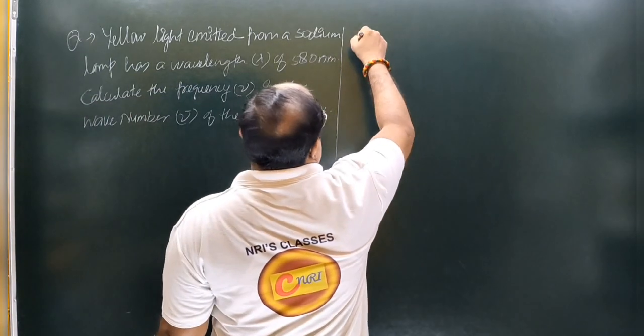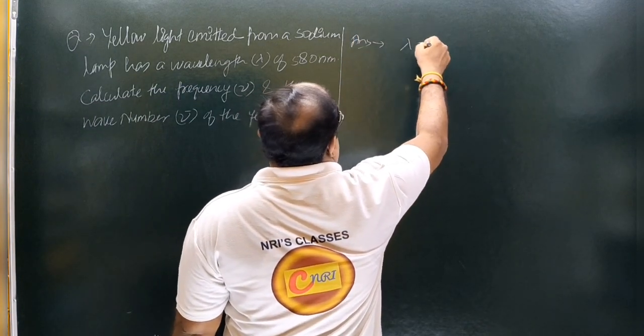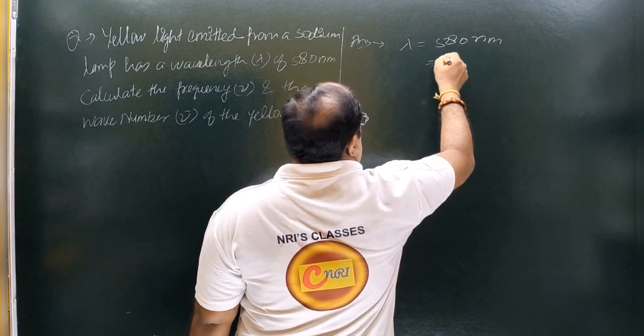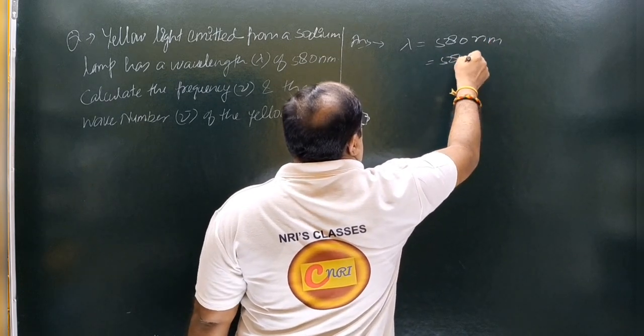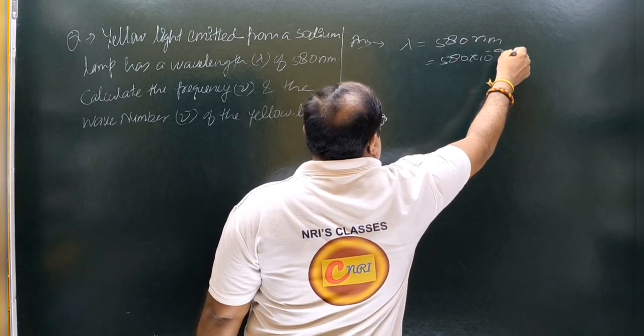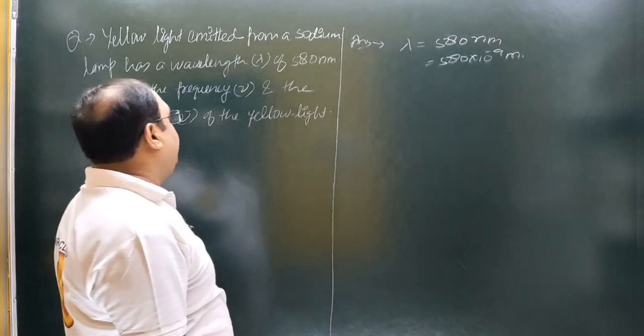आपको given value जो दी गई है, वो दी गई है lambda की — lambda की value दी है 580 nanometer, और इसको आप बदलोगे 580 into 10 to power minus 9 meter में। (The given value is lambda = 580 nm, converted to 580 × 10⁻⁹ meter.)